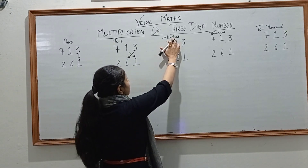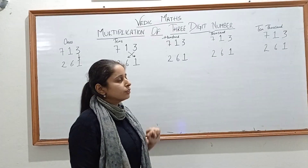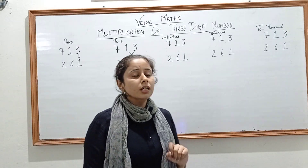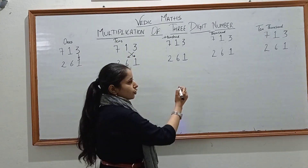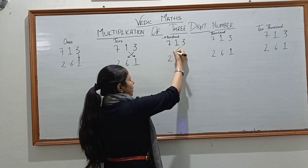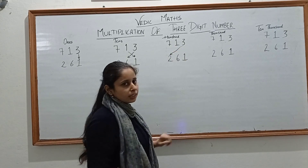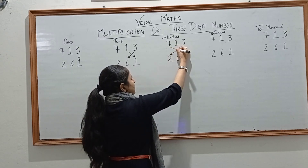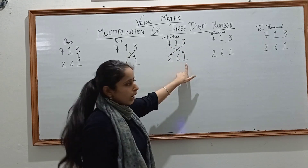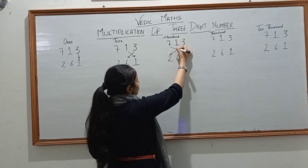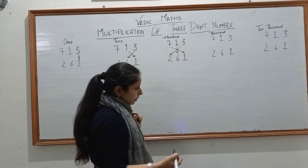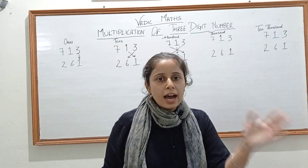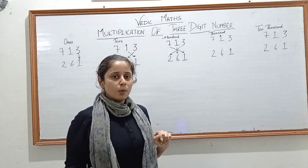For getting the digit on the 100th place, you have to follow crisscross multiplication. Multiply the first and the last digit — that is 3 into 2 — and again 7 into 1, and the middle of the 2 digits, that is 1 into 6. Here you will get 3 products. Add the 3 products and you will get 1 number.